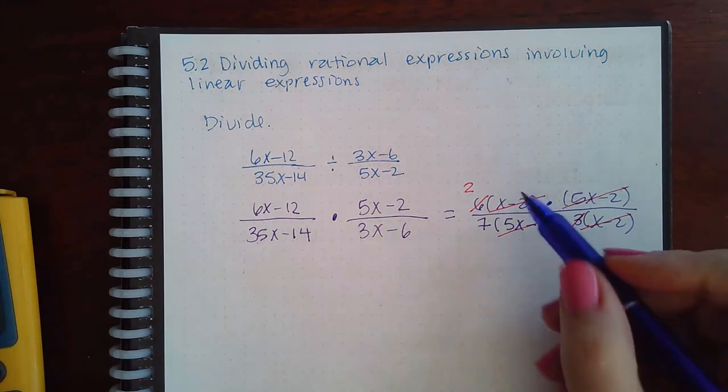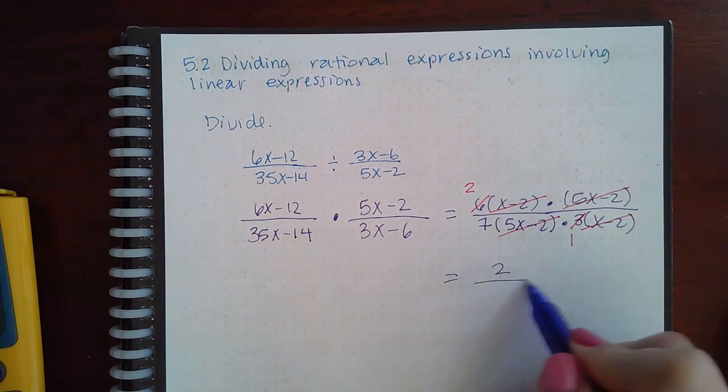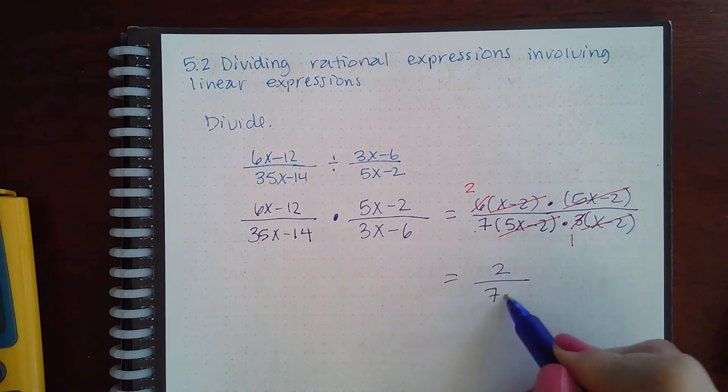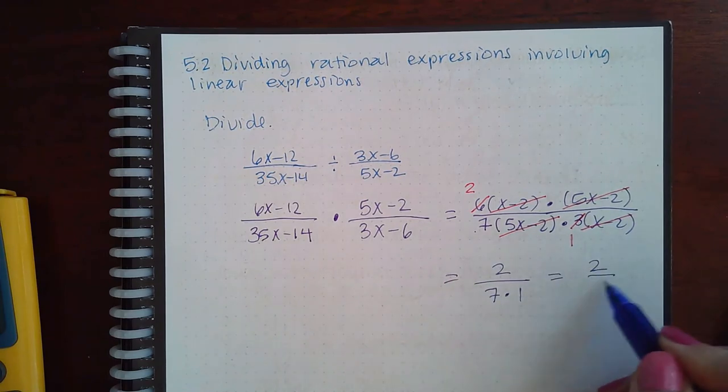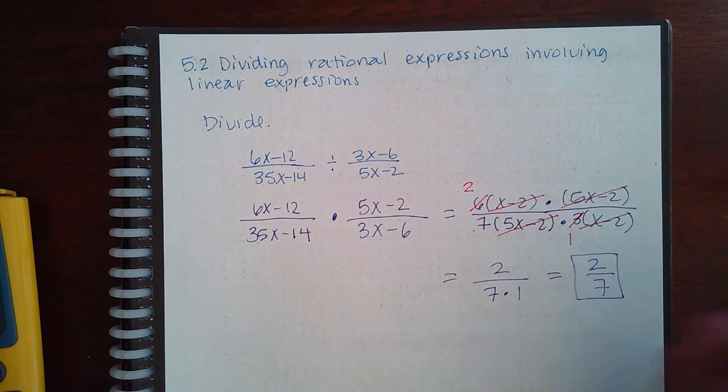So then I have 2 in the numerator and 7 times 1 in the denominator, so I end up with 2/7 as my final answer.